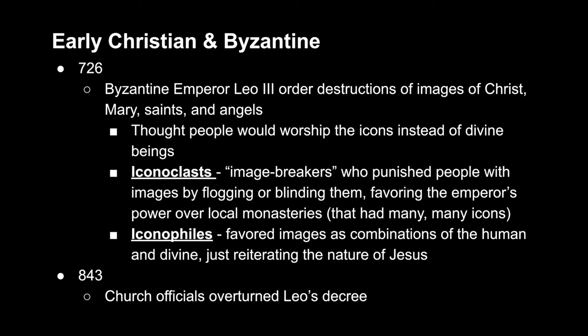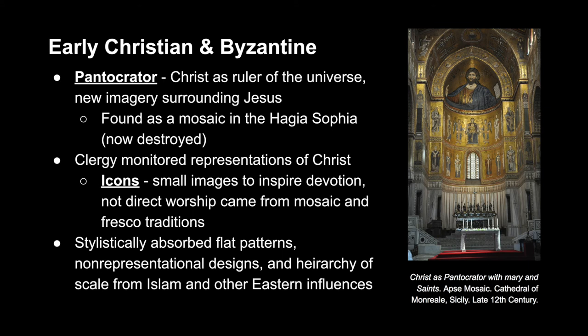Iconophiles were people who favored these images because they felt they truly represented Jesus' nature of being human and divine. There was the physical reality of the icon, but then the divine was supposed to go beyond it — you weren't supposed to worship the icon, but what it represented. By 843, church officials overturned Leo's decree. After this period, the new imagery surrounding Jesus was the Pantocrator, depicting him as ruler of the universe — one example seen in the Hagia Sophia, though that mosaic is now destroyed. The clergy closely monitored representations, favoring devotion but not direct worship. Icons were small images aimed to do just this. This period stylistically absorbed flat patterns, non-representational designs, and hierarchy of scale from Islam and other Eastern influences.